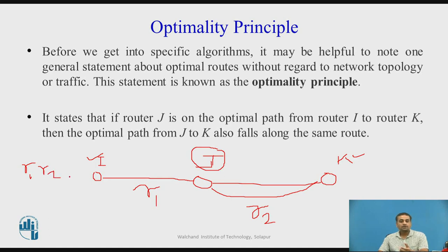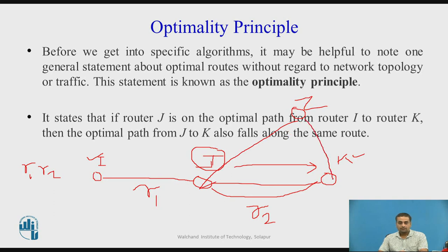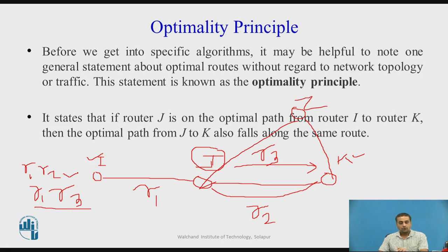J to K is also the optimal path, falling along the same route. If there were another router J' through which you could reach router K, and if the J'-to-K route were better than R2, then the optimal path from I to J' could have been R1-R3. This would contradict the optimality principle. So R1-R2 is the optimal path from I to K, and since router J falls on this path, J to K is also an optimal path.